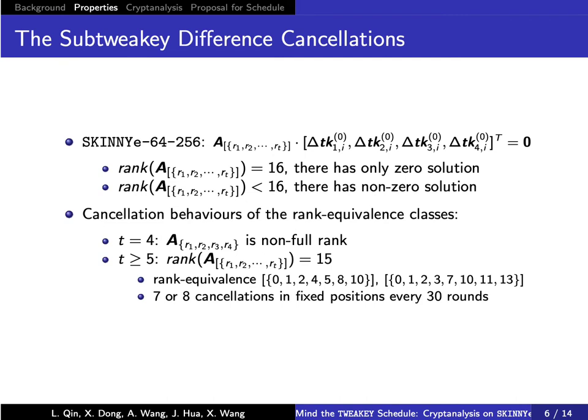In SkinnyE 64/256, the non-full rank properties can lead to more sub-Tweakey difference cancellations than expected. When the matrix is full rank, the master key difference has only the zero solution. When the matrix is non-full rank, the master key difference has non-zero solutions.